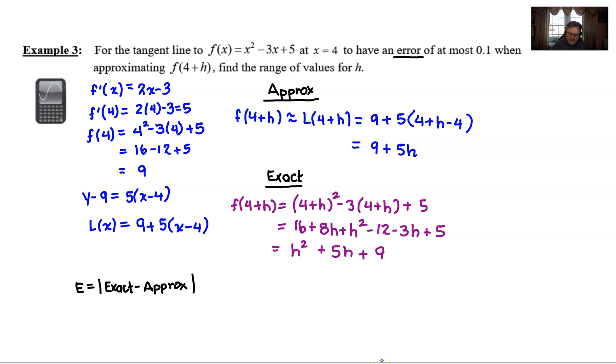So let's go ahead and finish up. We were told that our error, which is the absolute value of the exact minus the approximate.